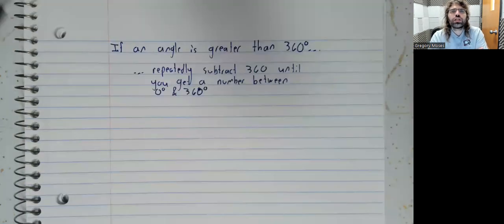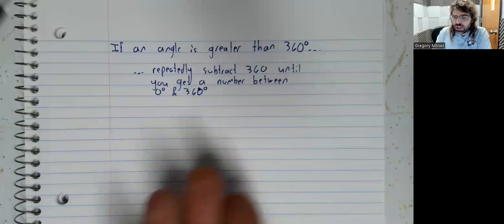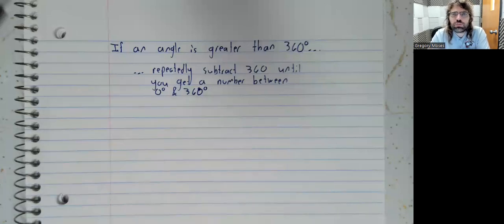If the angle is greater than 360 degrees, then to find this co-terminal angle, we'll repeatedly subtract 360 degrees until we get a number between 0 and 360. What we're actually doing here is dividing by 360 and taking the remainder. But this is probably going to be easier in practice.